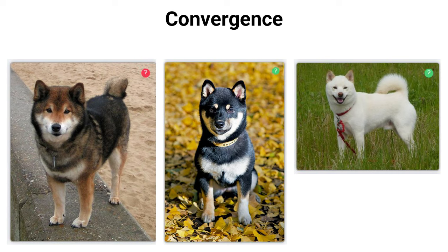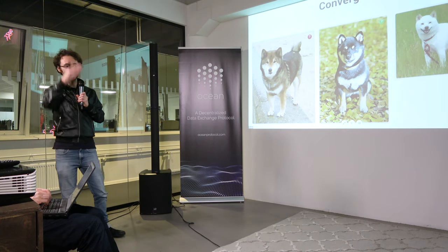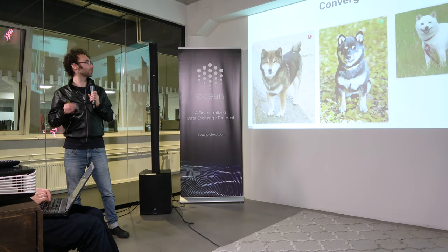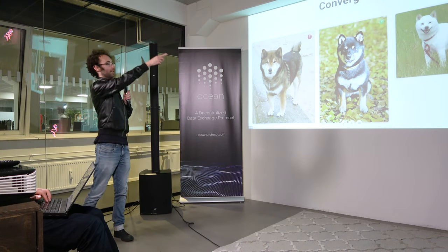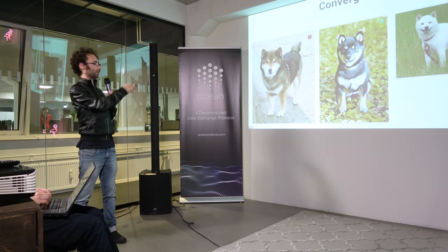Regarding convergence: when we got dogs that really looked like Doges but weren't technically Shiba Inus — related breeds — they were initially rejected, then it converged toward accepting them. We saw emergence of case law: jurors looked at the list, noticed dogs close to Shiba Inus were considered Doges, and then consistently accepted them, whereas they hadn't at the beginning.